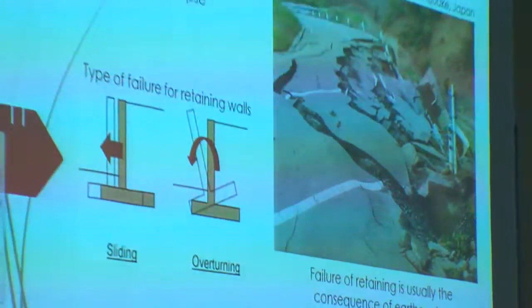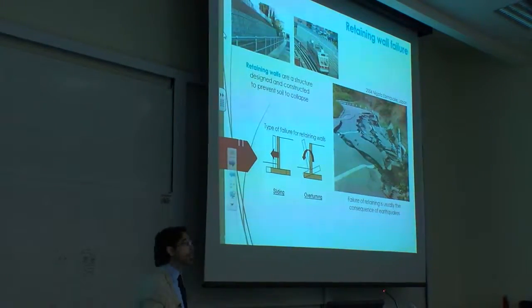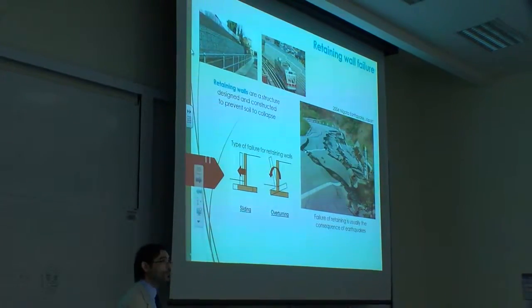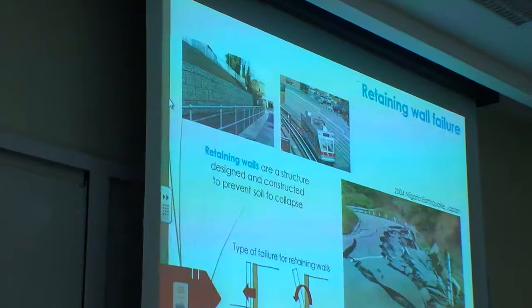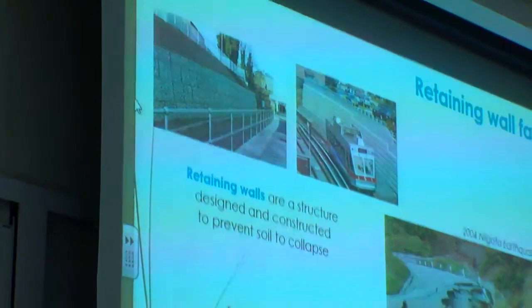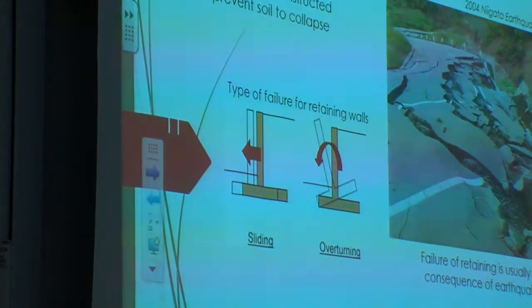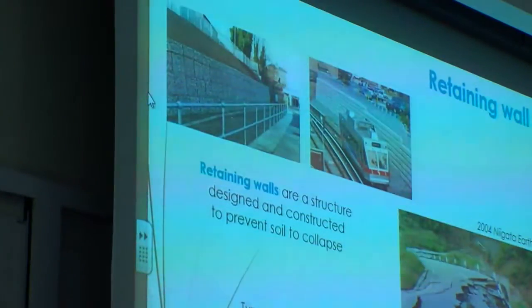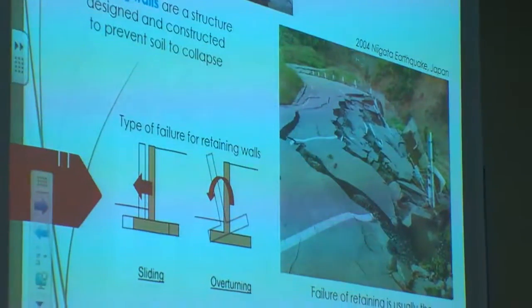Another typical failure mechanism is the failure of retaining walls. Retaining walls are structures designed by engineers to support the soil, but during an earthquake they are subjected to very large shaking. They can experience two types of failure: simple sliding, or overturning. Here you can see the consequences of the collapse of a bridge — this was a major road in Japan.